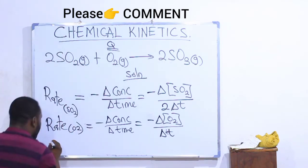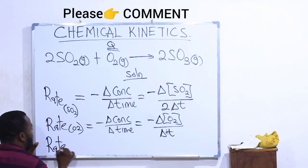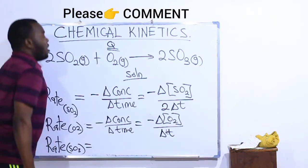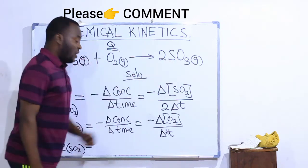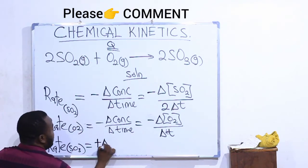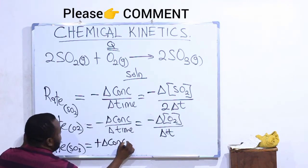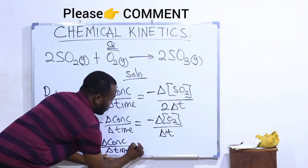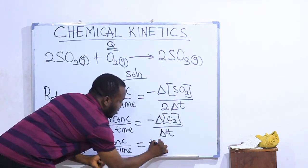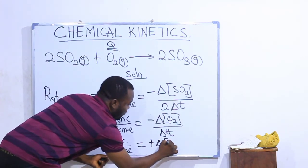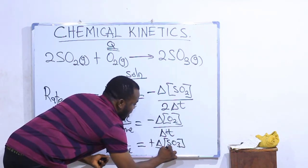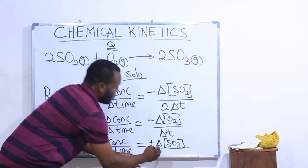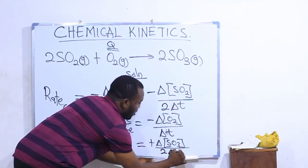Finally, we will write with respect to SO3. The rate with respect to SO3 — SO3 is on the product side, so it will carry a positive sign. It will be: positive change in concentration of SO3 divided by the coefficient of SO3 in the balanced equation, which is 2, times the change in time. That gives us positive change in concentration of SO3 divided by 2 times the change in time.